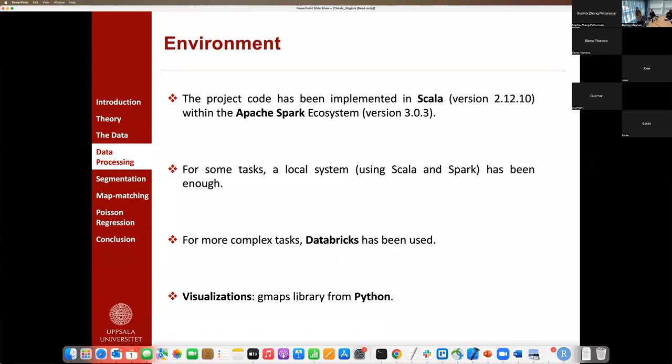Before going to the data processing, we will talk about the final model we will be using in the whole project. We've been implementing the code, the majority of the code in Scala, within the Apache Spark ecosystem. For some tasks, we used a local system, but for the majority of them, we were using Databricks. And for doing some visualizations, we used Folium.